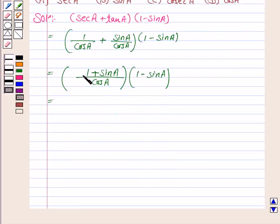Now here we see that we have 1 plus sin A and 1 minus sin A in the numerator. So here we use the formula of a square minus b square.